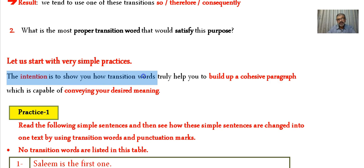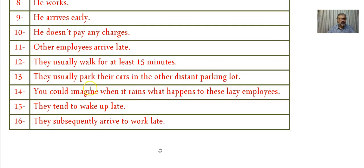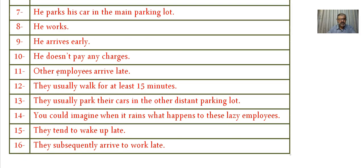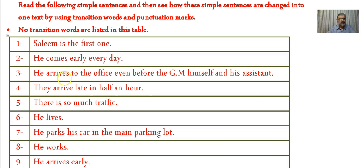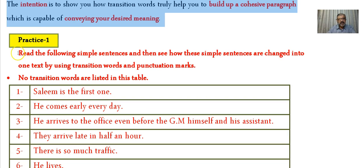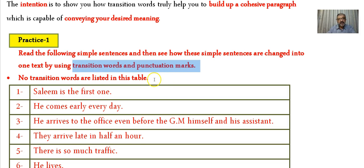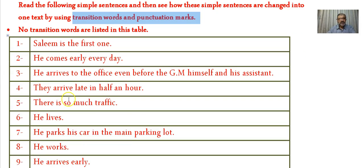Now let's start with some simple practices. The intention is to show you how transition words truly help you build up a cohesive paragraph capable of conveying your desired meaning. Practice One: I'm going to give you 16 simple sentences. Some are independent clauses, some are dependent, and some are even compound. Through reading, I'd like you to see how simple sentences are changed into one text by using transition words and punctuation marks — which must always be studied together.